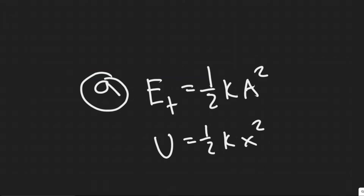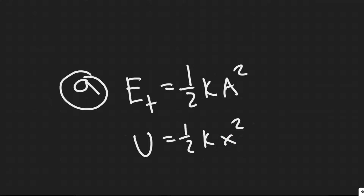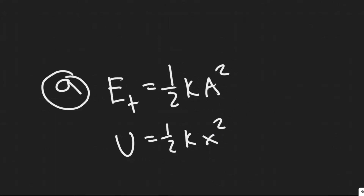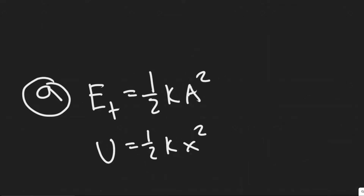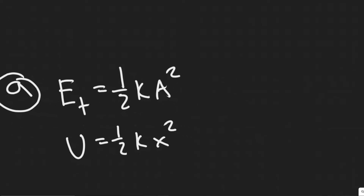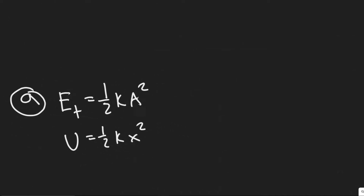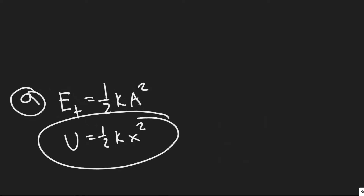For the first part, we're essentially going to be solving for the x value. They say 'what displacement' — so what they're talking about is x. The x always represents how far the spring is displaced from its original position. Is the energy half kinetic and half potential? So we're going to be finding this, and you need to know two formulas.